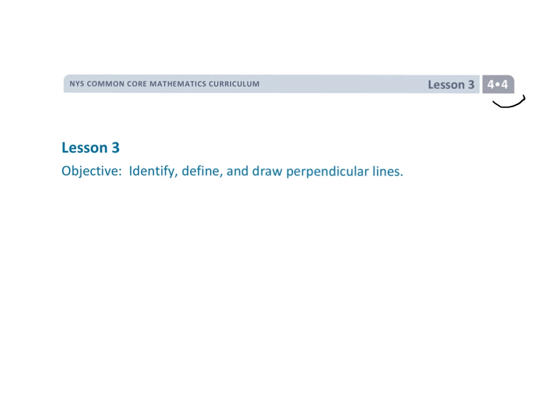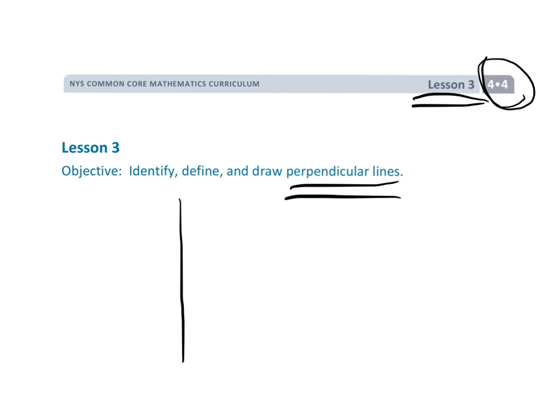All right, this is grade 4, module 4, lesson 3, and we're going to be learning all about perpendicular lines. Basically, a pair of perpendicular lines are two lines that when they intersect, they intersect and form a 90 degree angle.